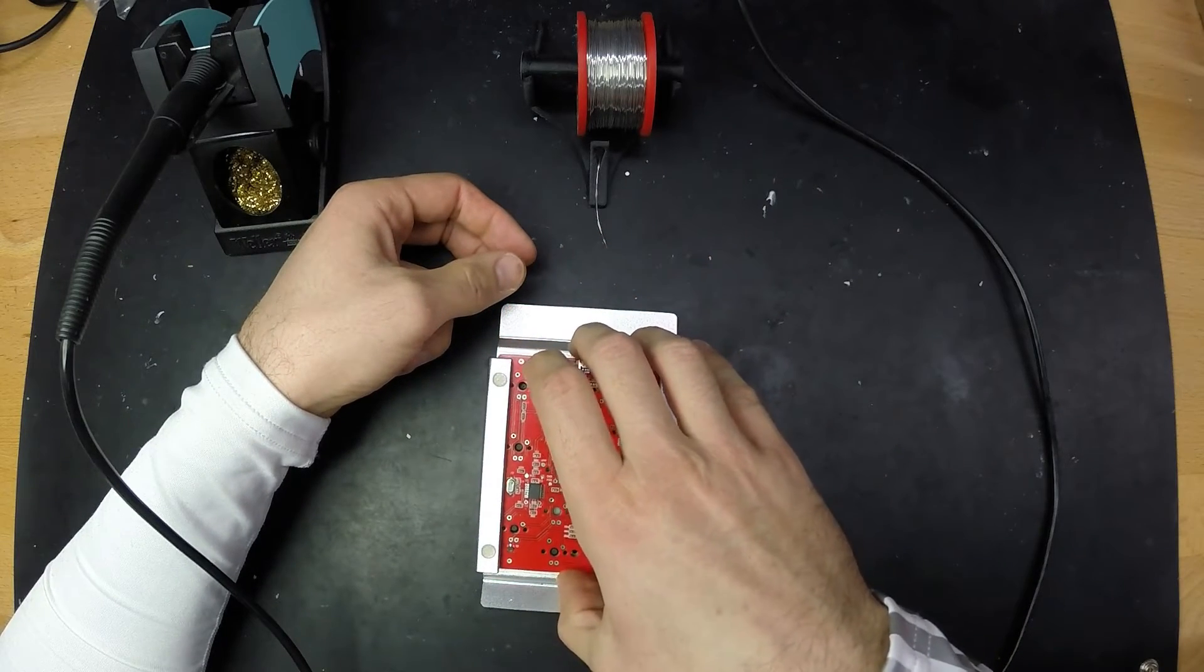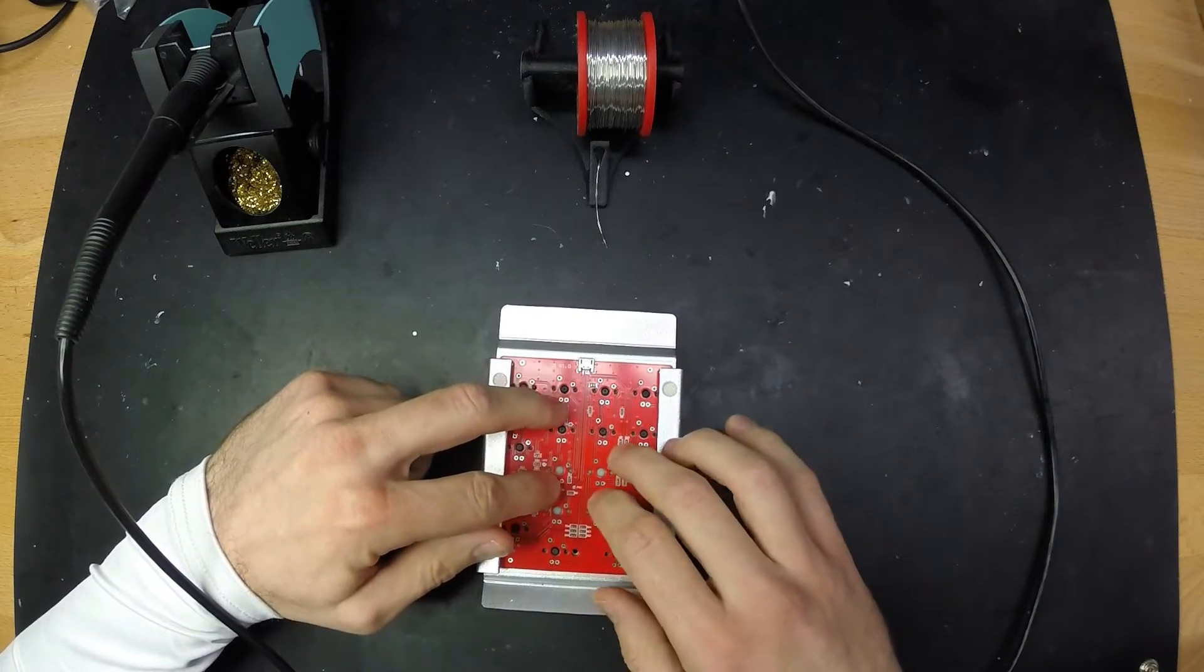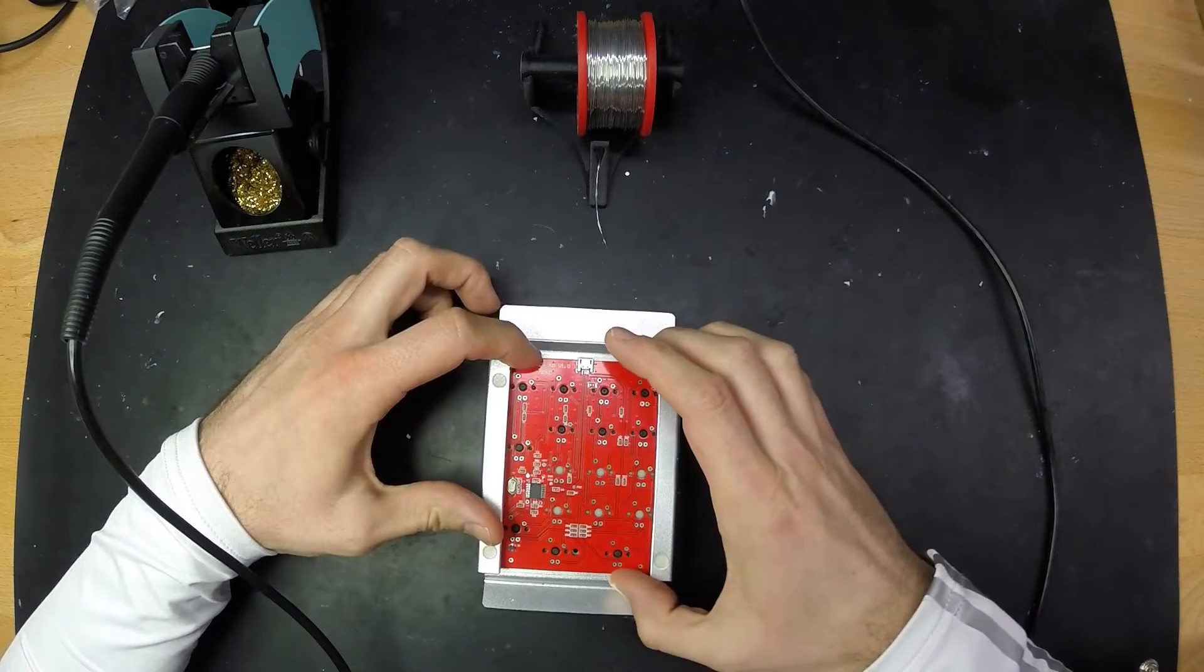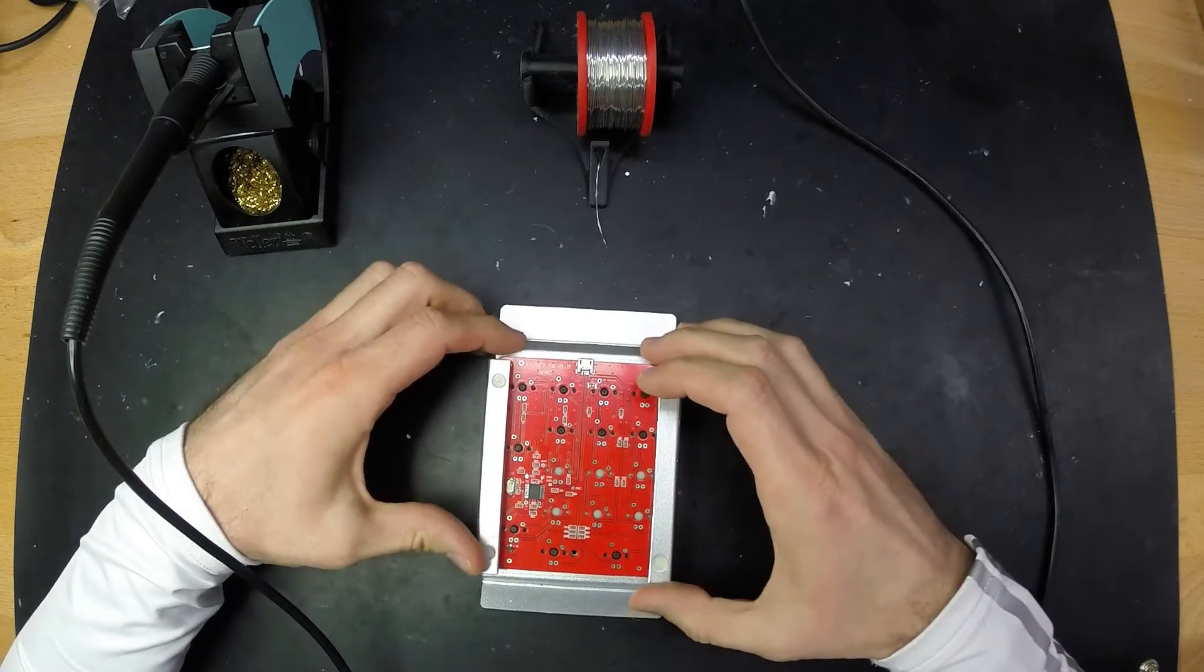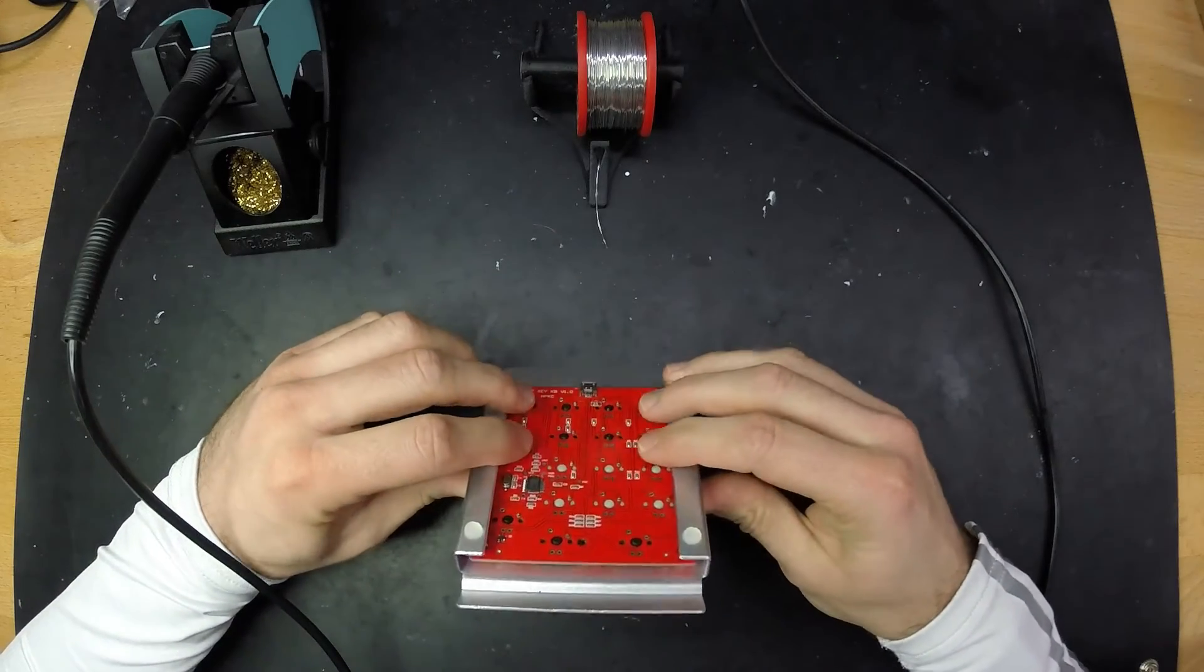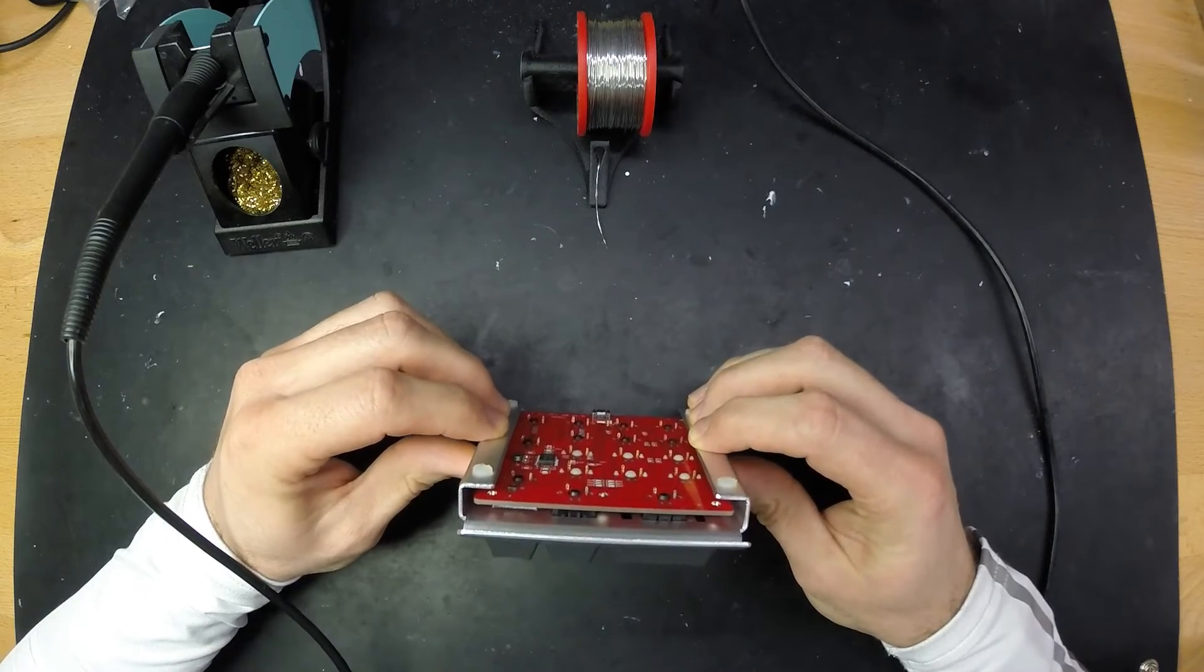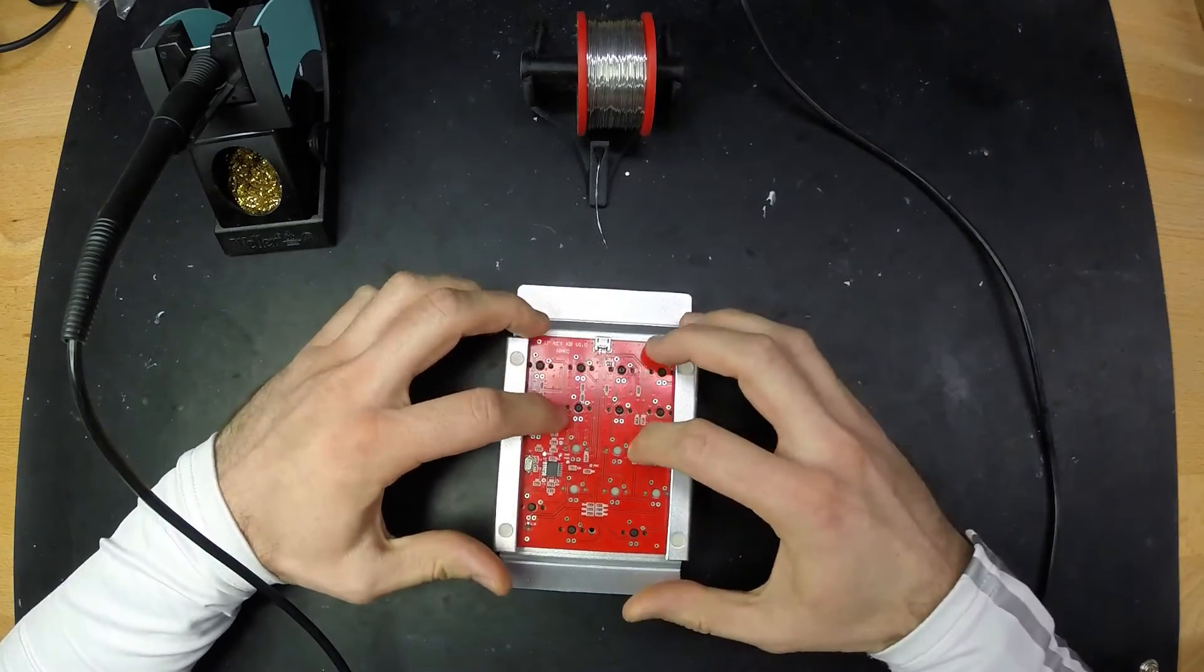Make sure that all the contacts are straight, like sticking up straight. When I got mine there were like two or three contacts that didn't properly point up and you don't want to bend them when you place the PCB here. Now the PCB should be sitting on the contacts and on those little plastic pins in the middle, like in the center of the switches, all aligned nicely.